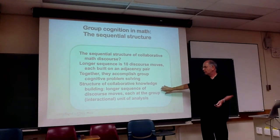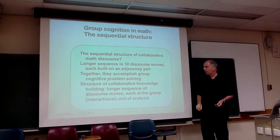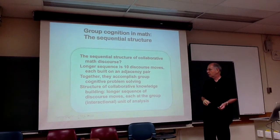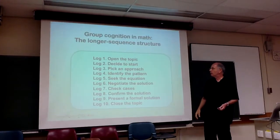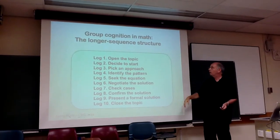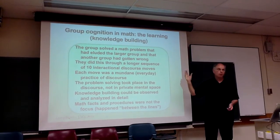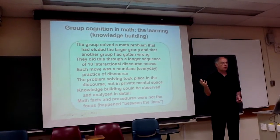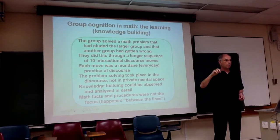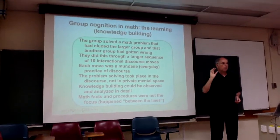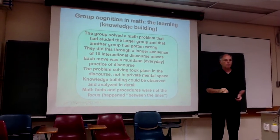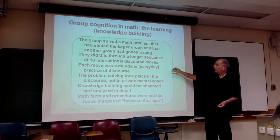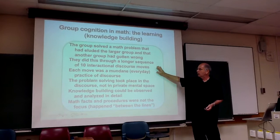I conclude that this is an example in which we can see the longer sequence, how it's built interactionally, and what its structure is — namely a sequence of simple moves with adjacency pairs. They solved a problem which had eluded their own group for several hours of thinking. It had eluded other groups; another group thought they had an answer, but this group figured out that answer was wrong. They did really important and impressive mathematical work that none of them could have done alone — it was done by the group through their interaction.